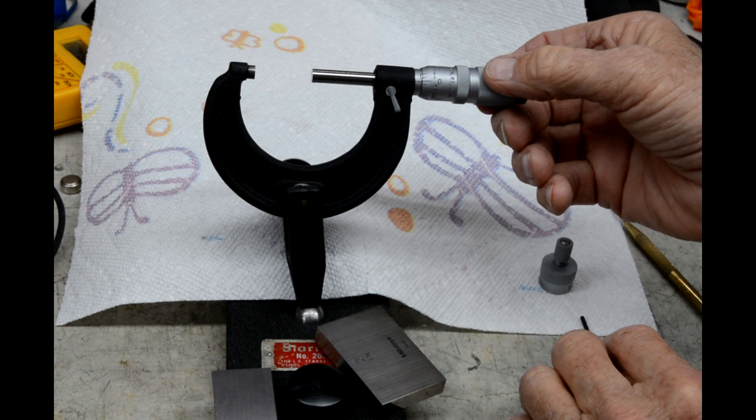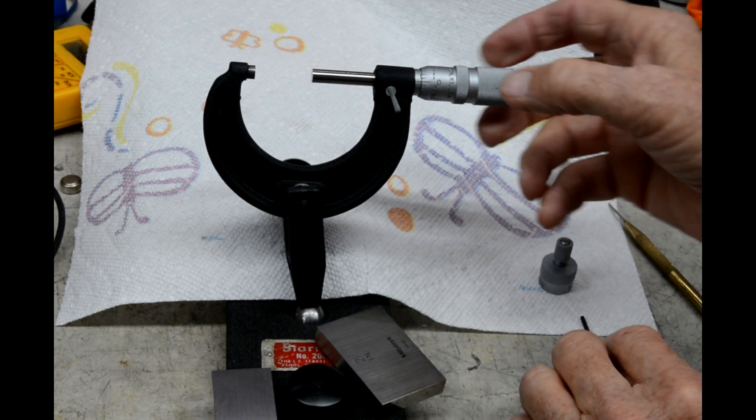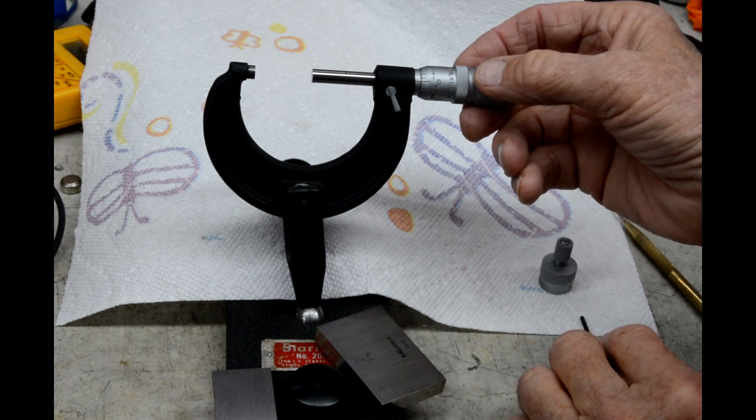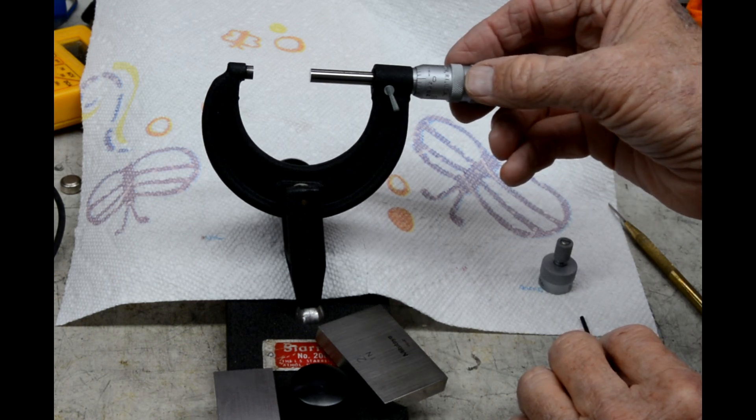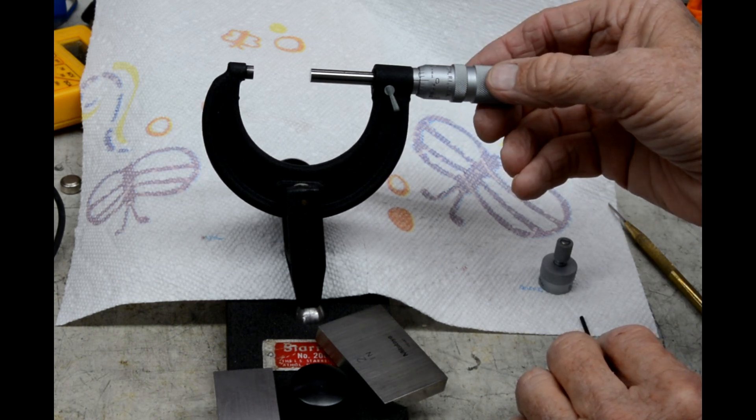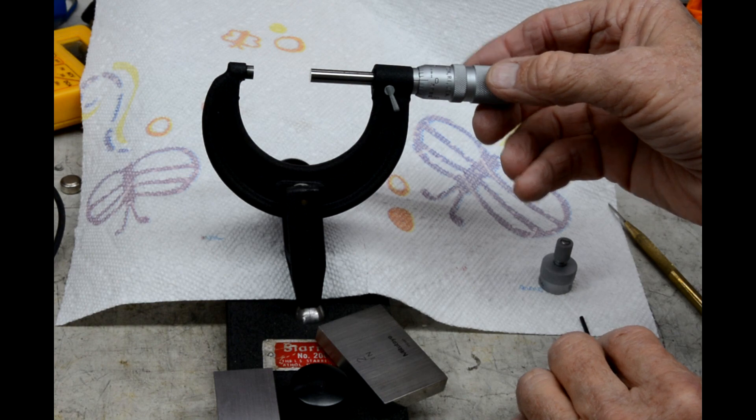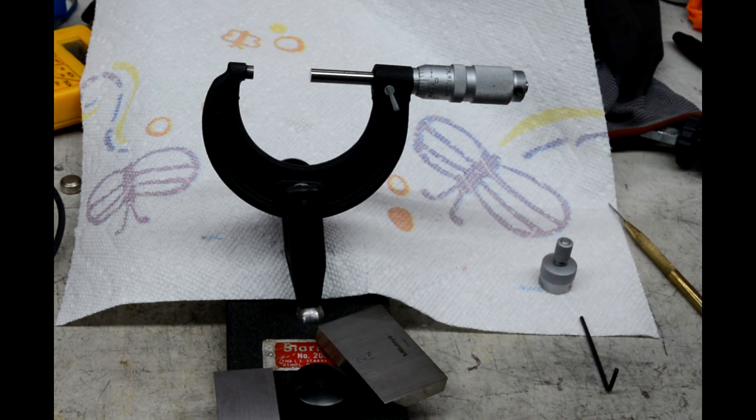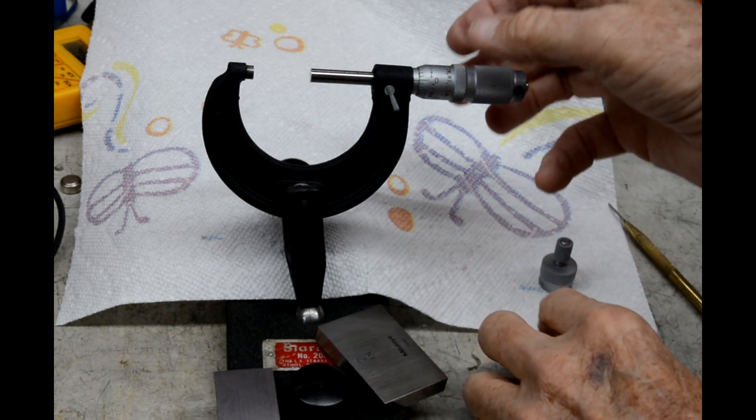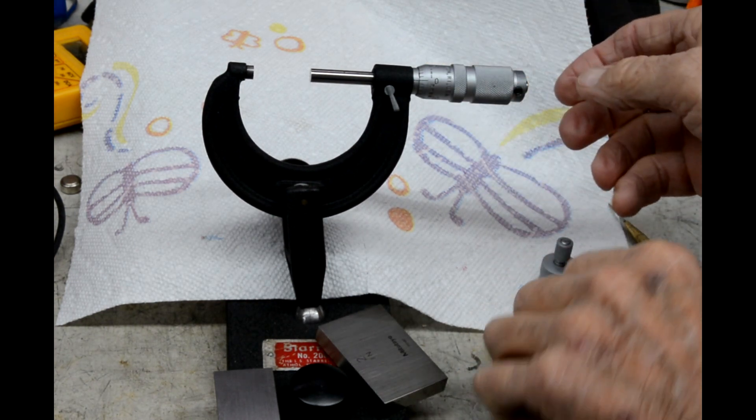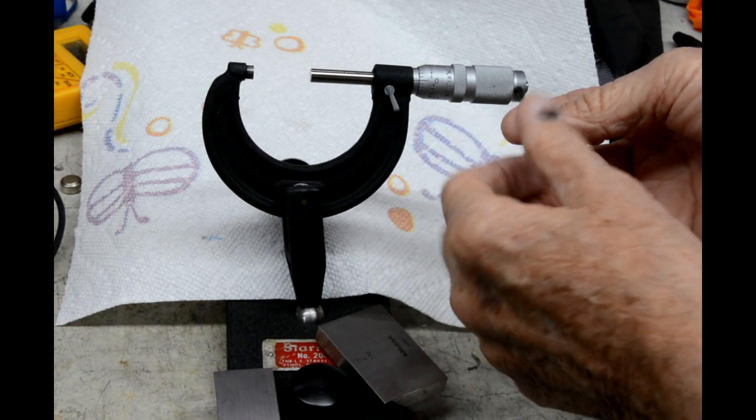So anyway, you loosen this and then turn it until you're lined up this way and lined up on the line. Once you've got both of those done, then you can tighten it again.